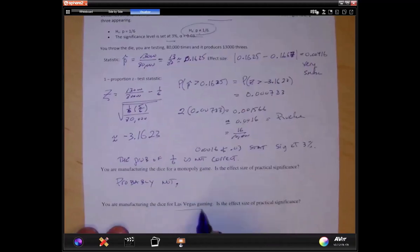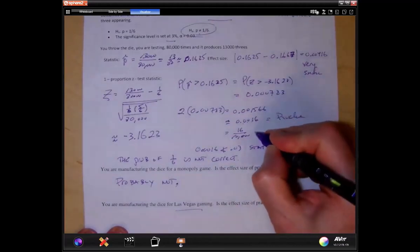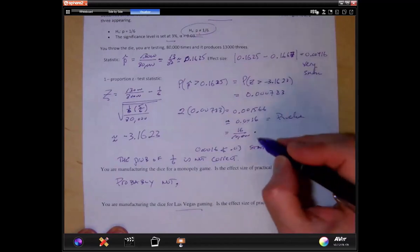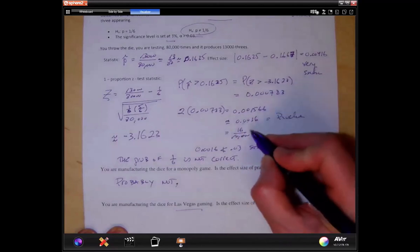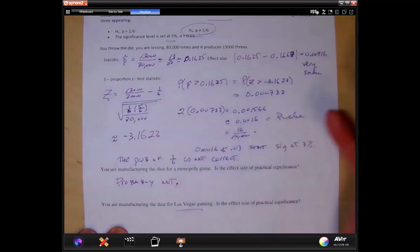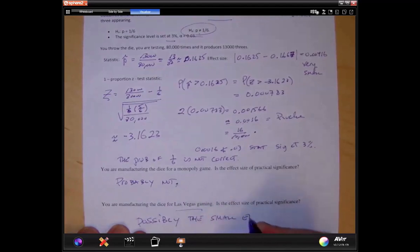You're manufacturing the dice for Las Vegas gaming. Is the effect size of practical importance? Well, now it's a little different, isn't it? Because when we talk about Vegas, the way they set up their games, it is important all of a sudden to know exactly what these numbers are, or at least very close to that. And the question we have is, is being off this much, a little bit, is that going to affect the revenue stream coming into this game? So is the effect size of practical importance for Las Vegas? I don't know. I would have to do some more calculation. But possibly, the small effect size is of practical importance.